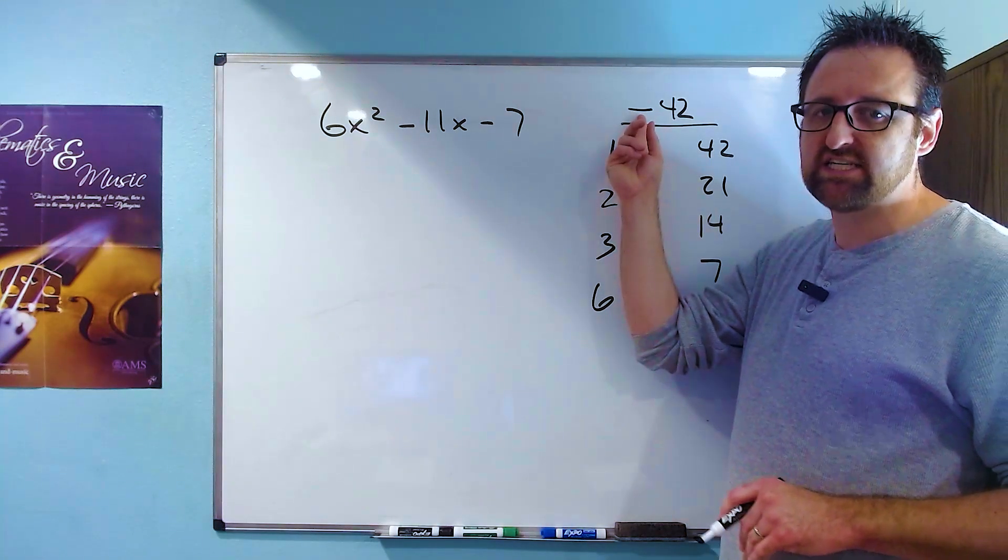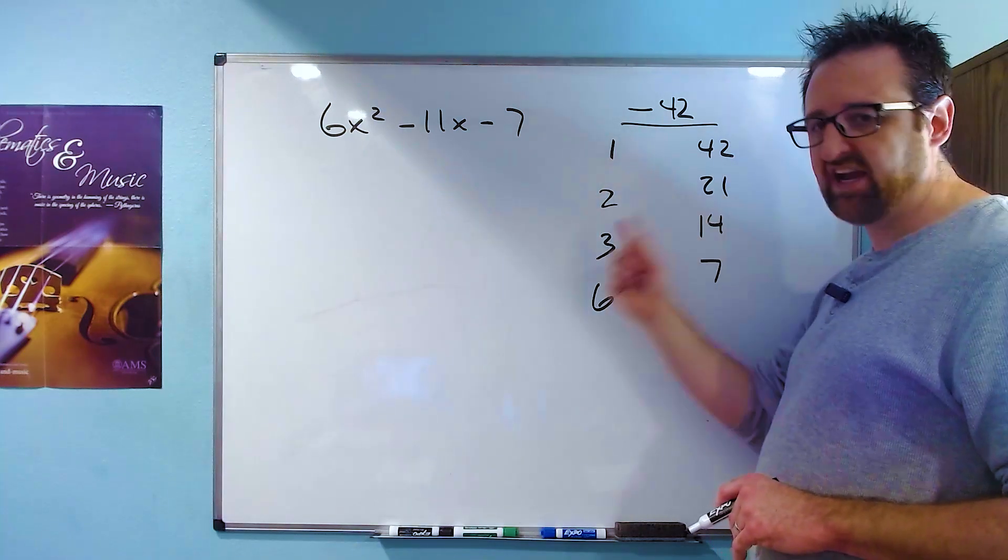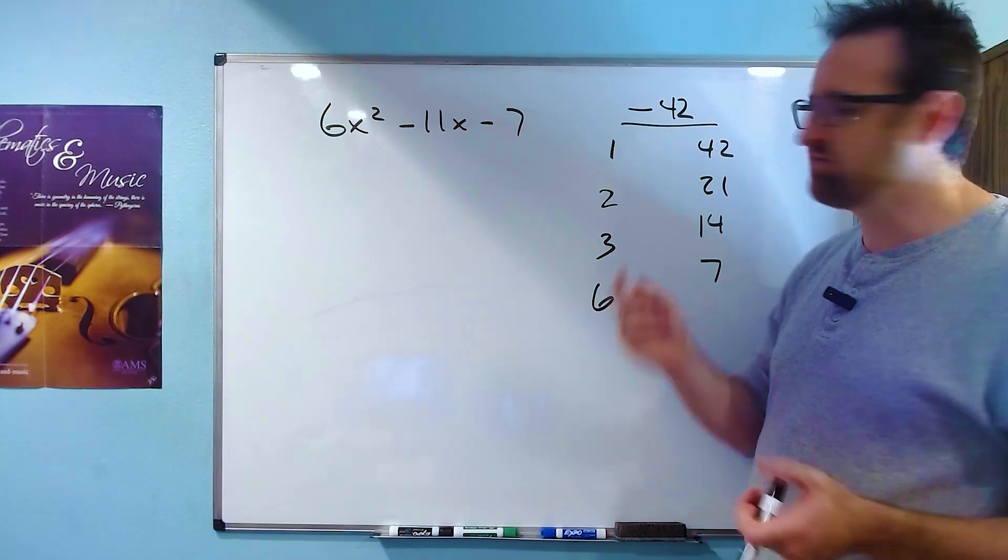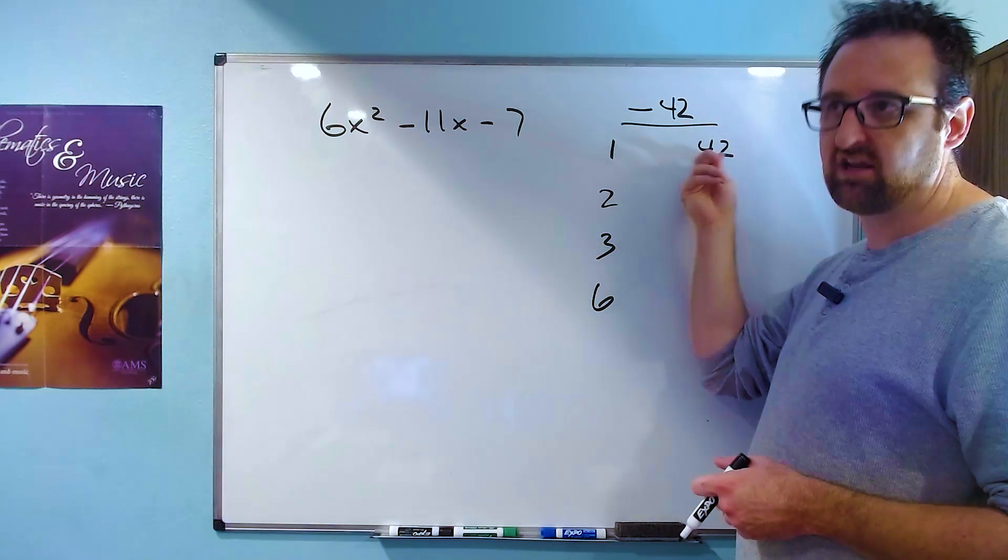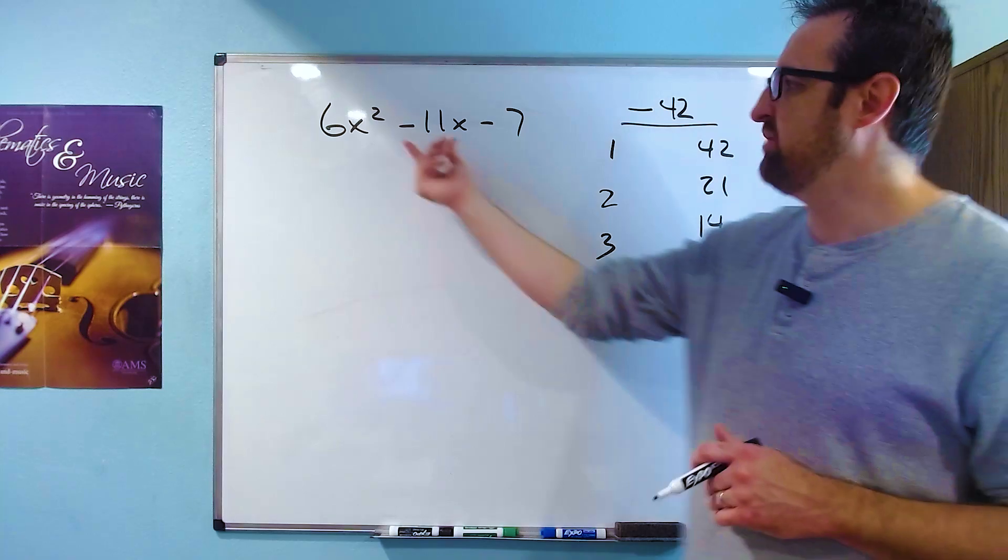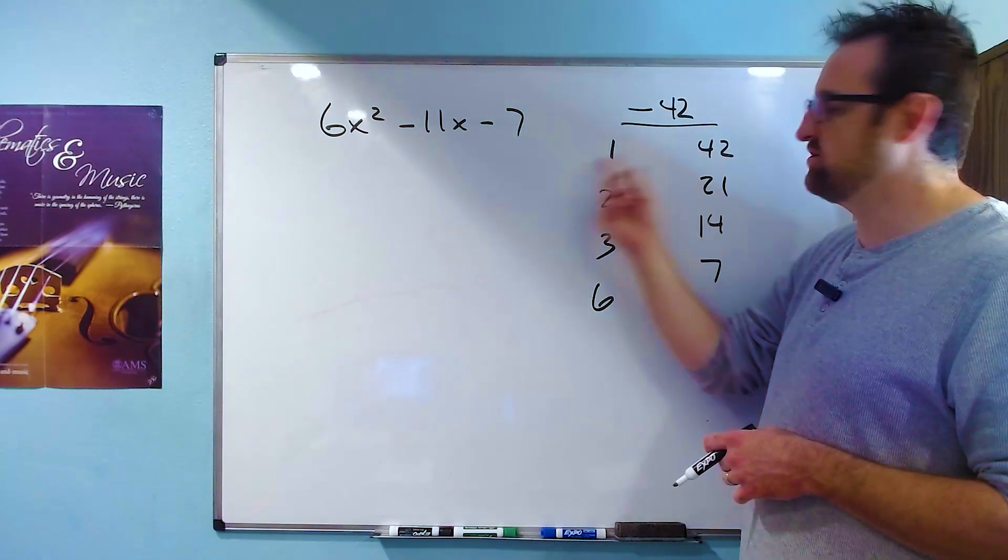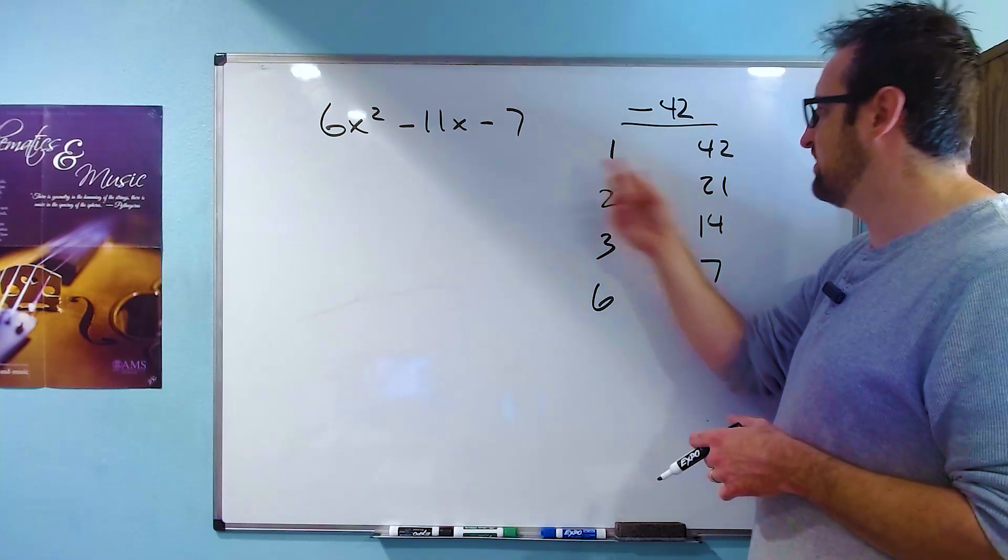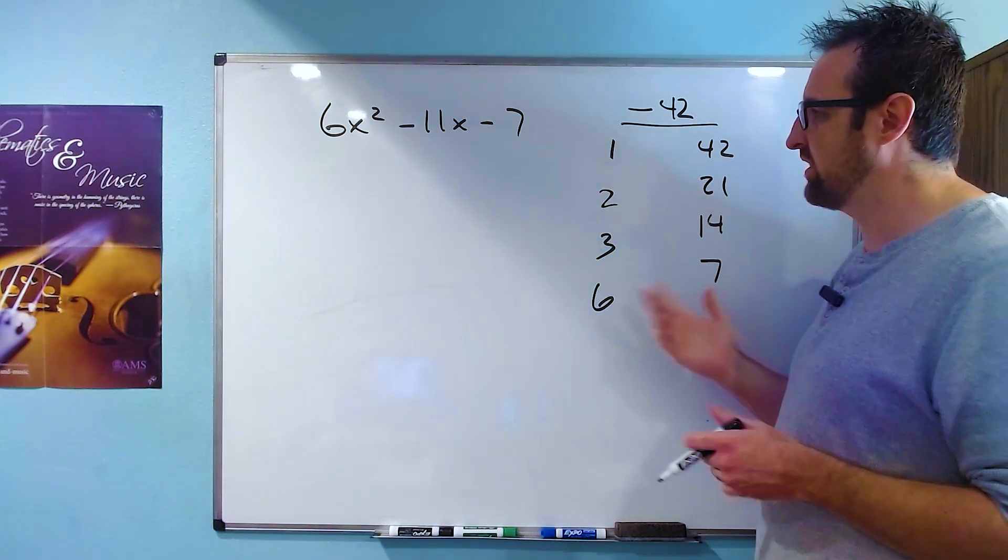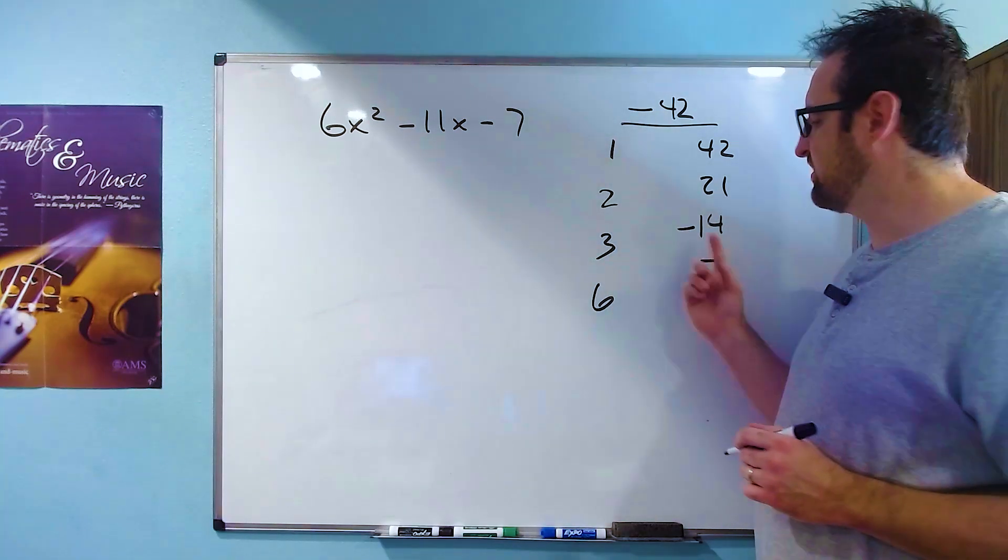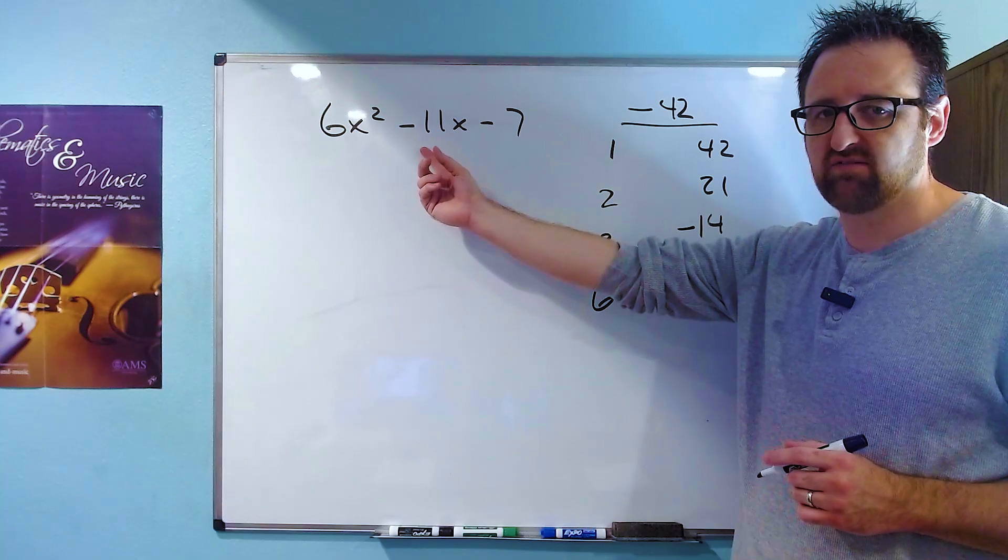Because the product is negative, it means that these factor pairs have to have opposite signs. So each pair actually has two different forms. It could be negative 1 and 42 or negative 42 and 1. We're looking for the pair that adds to negative 11. And you could go through and try each one of them. But you'll find that the pair that works is 3 and negative 14 because 3 plus negative 14 is negative 11.